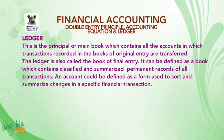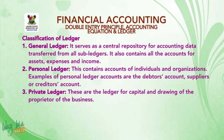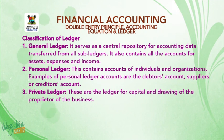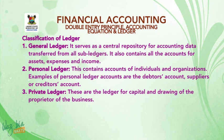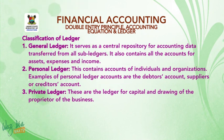An account can be defined as a form used to sort and summarize changes in a specific financial transaction. Classification of ledger: Number one, general ledger — it serves as a central repository for accounting data transferred from all sub-ledgers, and also contains all the accounts for assets, expenses, and income. Number two, personal ledger — these contain accounts of individuals and organizations; examples include the debtor's account and supplier's or creditor's account. Number three, private ledger — these are the ledger for capital and drawings of the proprietor of the business.